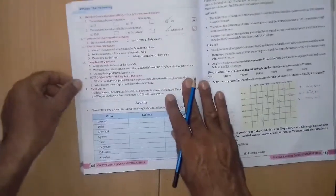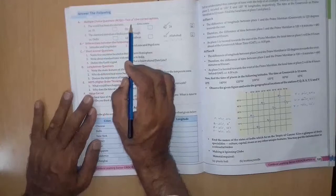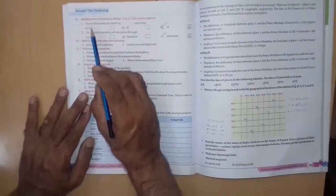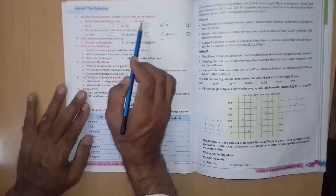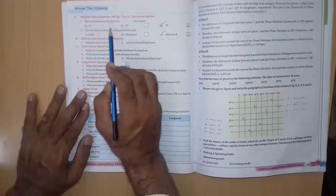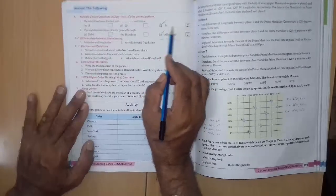Now, page number 122. Multiple choice question. Tick the correct option. 1st, the world has been divided into dash time zones. A 15, B 20, C 24. Right answer is 24. C.